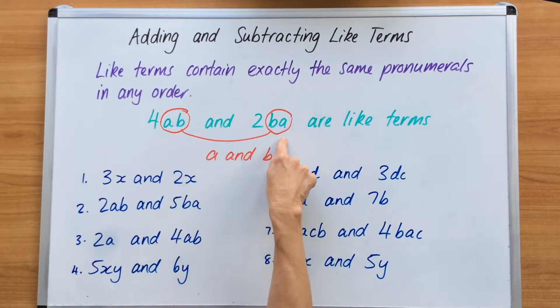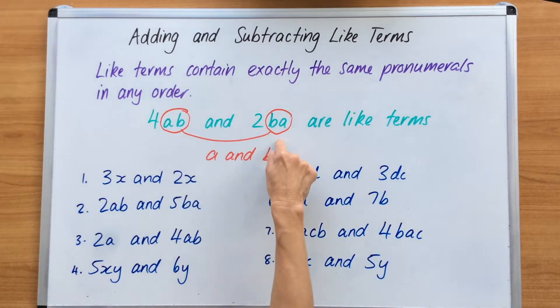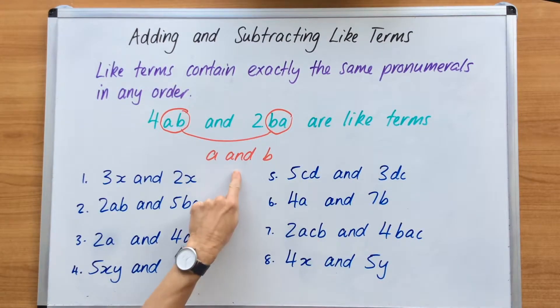This is an AB, this is a BA. They are like terms and I always say that these like terms are related to each other because they have the same letters, the same pronumerals. A and B are what's like about 4AB and 2BA.